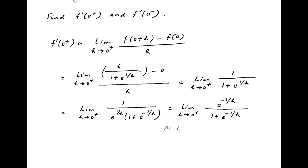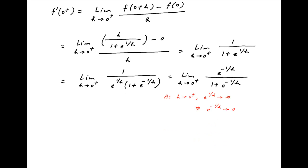Now as h tends to 0 from the positive side, 1/h tends to infinity, therefore e^(1/h) also tends to infinity, which implies that e^(-1/h) tends to 0. Therefore the value of f'(0) from the positive side is equal to 0 / (1 + 0), which is equal to 0.